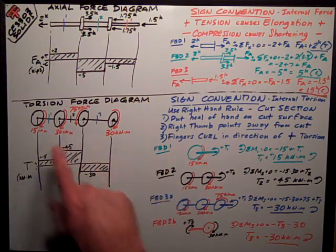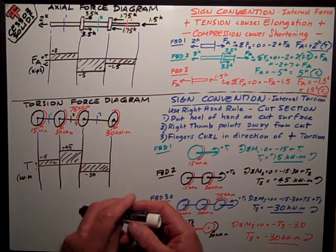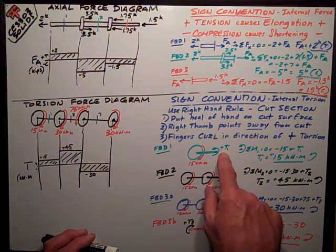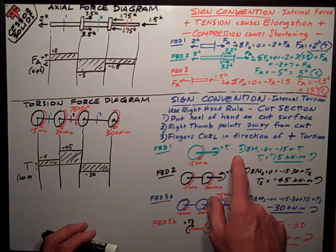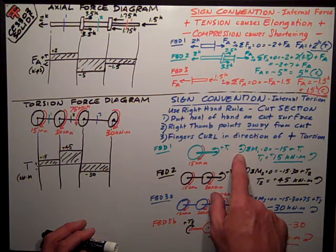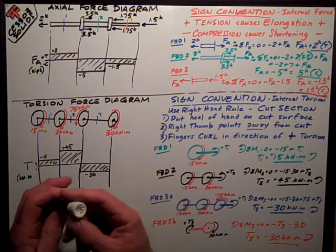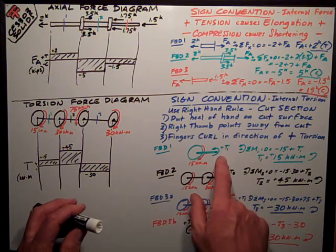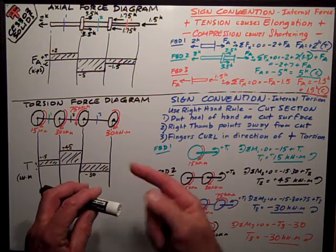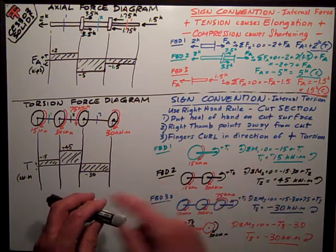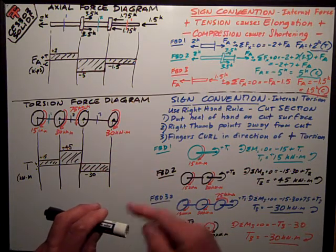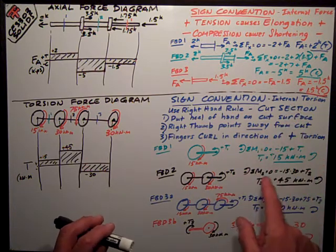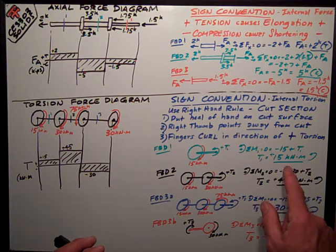For free body diagram at section 1, I have the gear at the left end with 15 kilonewton meters coming under, and my assumed positive torsion T1. I do a sum of moments equation assuming counterclockwise is positive. That gives negative 15 plus T1 equals 0. Rearranging, T1 equals positive 15 kilonewton meters.